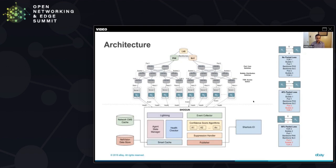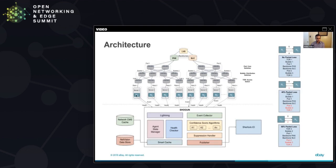Above the dotted line is our regular network: we have servers within racks, then a layer of top-of-rack switches, then bubbles, then pods, and then the backbone networks. eBay is deployed in three regions connected through the backbone network. The agent state manager crunches data from the NetVision data store to build configurations for each agent, and the Lightning system pushes those configurations out to the agents.